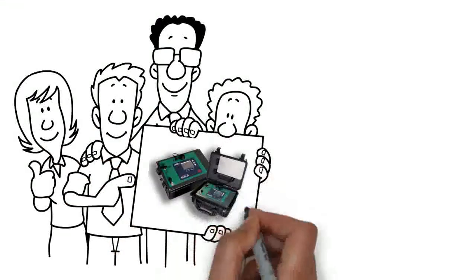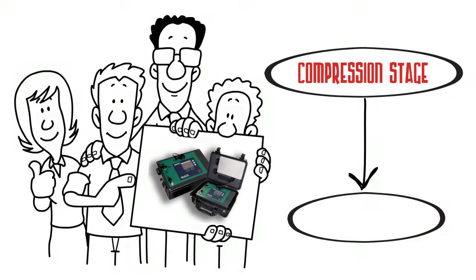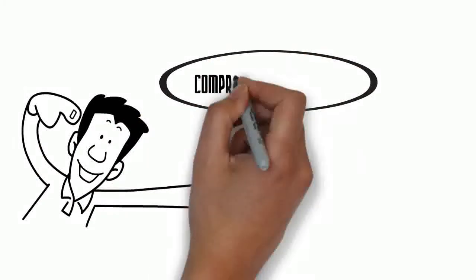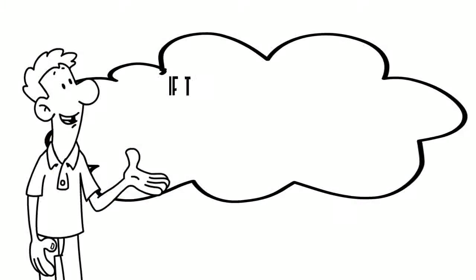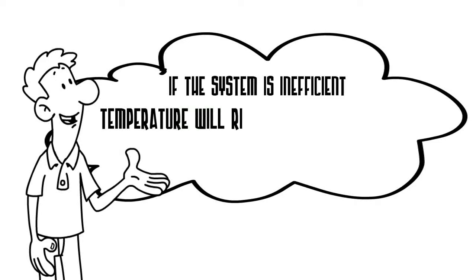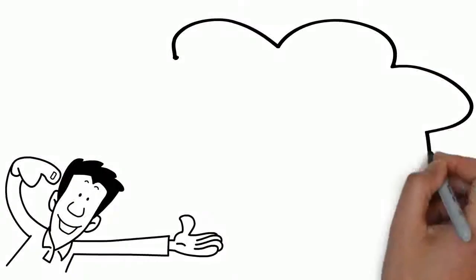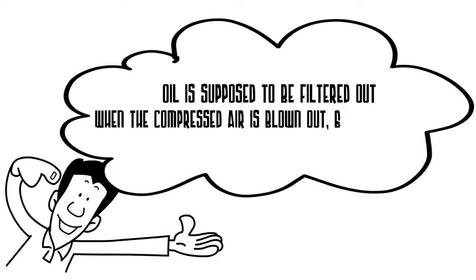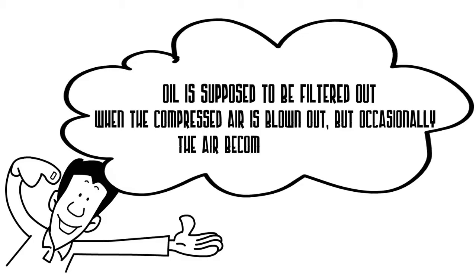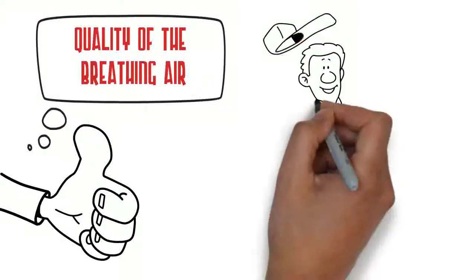So why do you need a gas analyzer? During the compression stage, to achieve the necessary seal, all working parts are lined with oil. The compressing of the air generates heat, and if the system is insufficient, the temperature will rise to where the oil turns into vapor. Following this stage, the oil is supposed to be filtered out when the compressed air is blown out, but occasionally the air becomes contaminated.